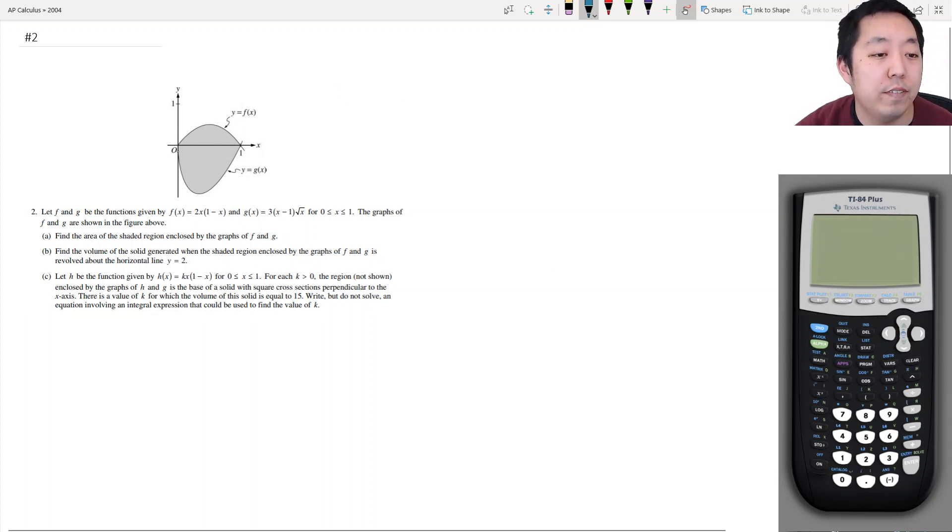Let f and g be functions given by this and this. The graphs I was trying to figure out. Find the area of the shaded region enclosed by the graphs of f and g.